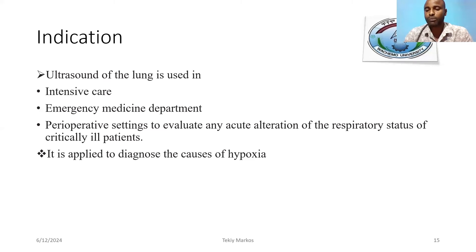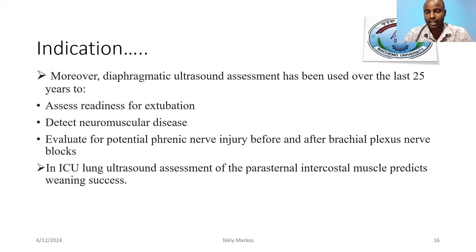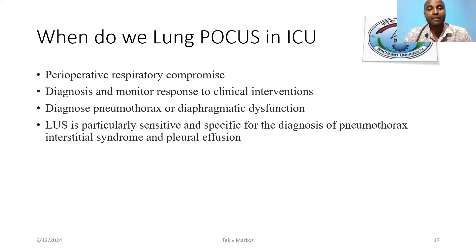Most commonly, causes of hypoxia will be identified. Diaphragmatic ultrasound assessment has been available for over 25 years. It is used to assess readiness for extubation, neuromuscular diseases, and to evaluate potential phrenic nerve injuries before and after brachial paralysis and nerve injury. It is a great opportunity to use point-of-care ultrasound for our patients.